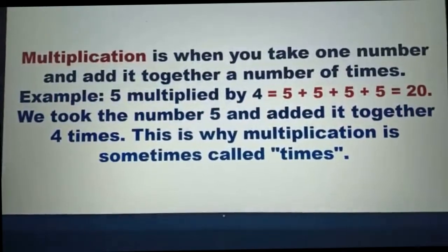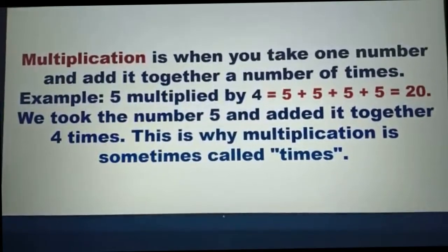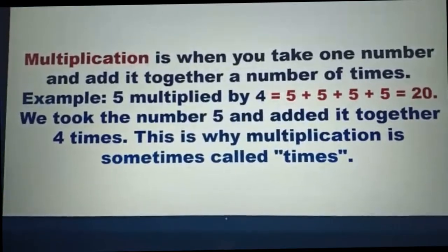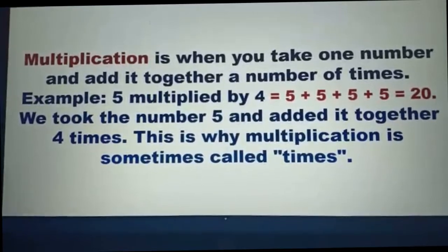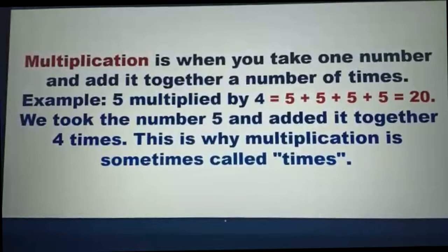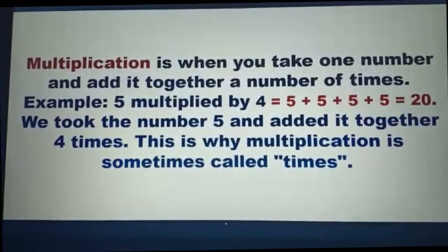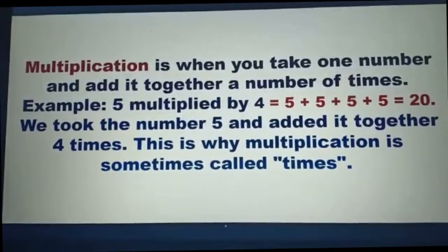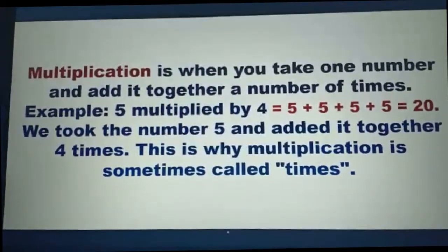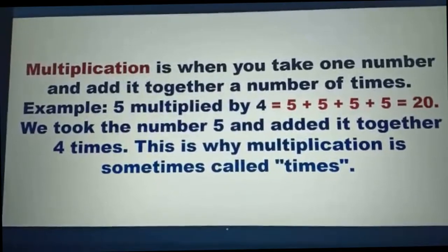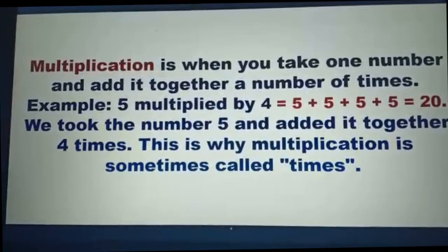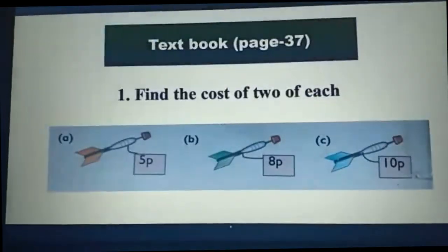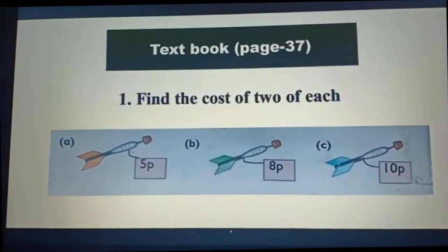Multiplication is when you take one number and add it together a number of times. For example, 5 multiplied by 4 — we can write it as 5 plus 5 plus 5 plus 5, and the answer will be 20. We took the number 5 and added it together 4 times. This is why multiplication is sometimes called 'times'.